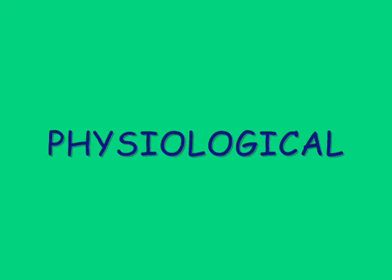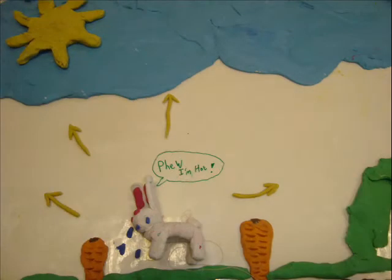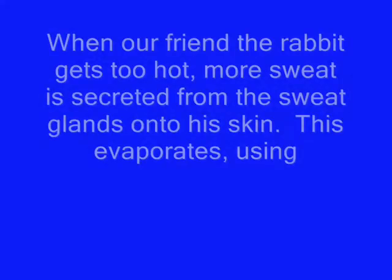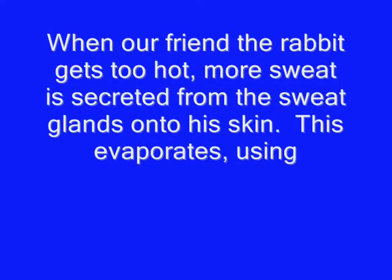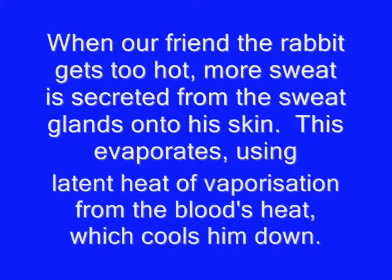Physiological. When our friend the rabbit gets too hot, more sweat is secreted from the sweat glands onto his skin. This evaporates using latent heat of vaporisation from the blood's heat, which cools him down. If the body temperature is too low, less sweat is secreted — less evaporation of water, so less loss of latent heat.